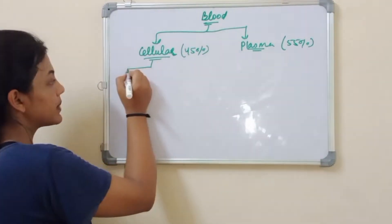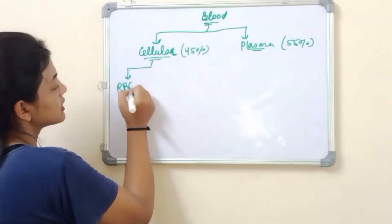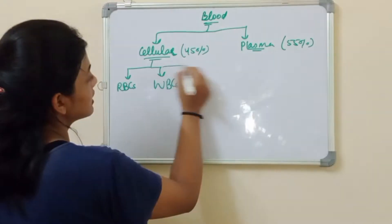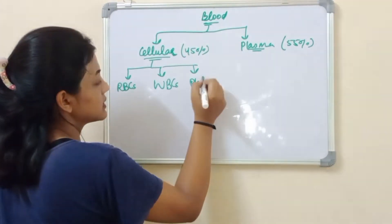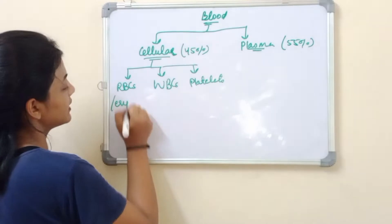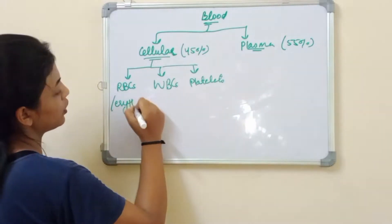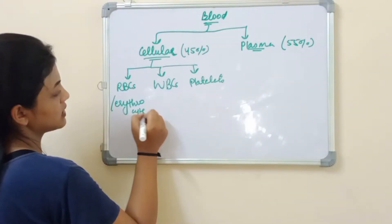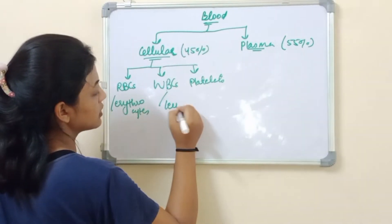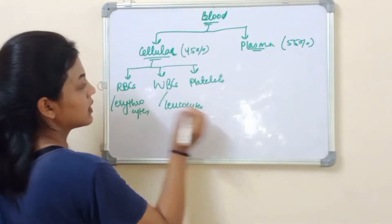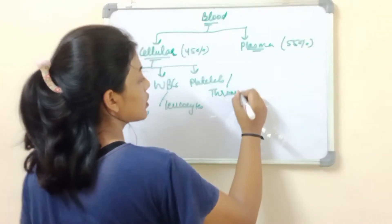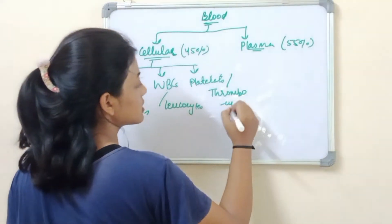The cellular component comprises of RBCs or erythrocytes, WBCs or leukocytes, and platelets, also called thrombocytes.